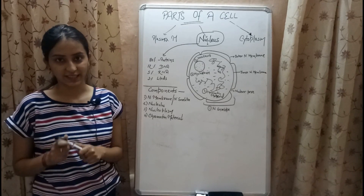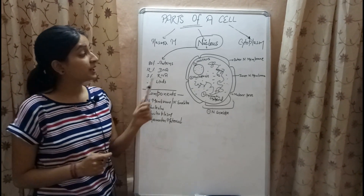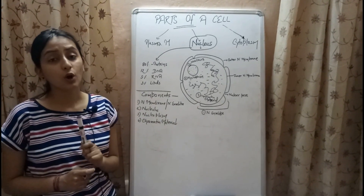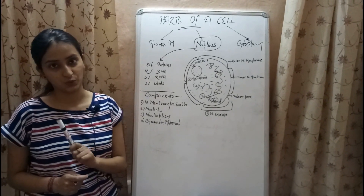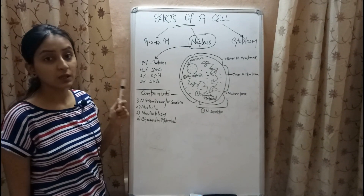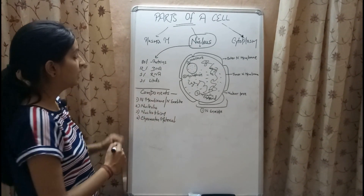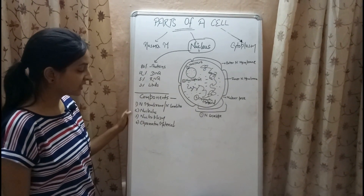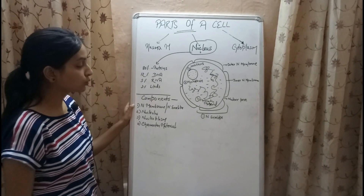Now let's move on to the nucleus. Nucleus is an oval or spherical structure present inside the cell, discovered by botanist Robert Brown. It is known as the director of the cell since it controls all cellular activities, and it is the largest cellular structure. Nucleus consists of 80 percent proteins, 12 percent DNA, 5 percent RNA, and 3 percent lipids.